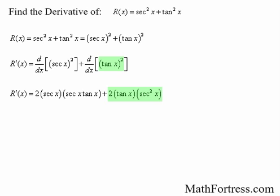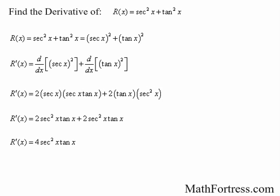The outer function is x squared and the inner function is tangent of x. So using the chain rule, we have 2 times tangent of x times secant squared of x. Reducing the expression and combining like terms, we have the final derivative equal to 4 times secant squared of x times tangent of x.